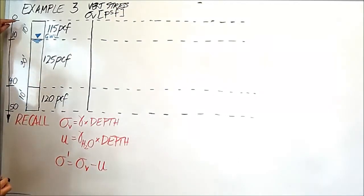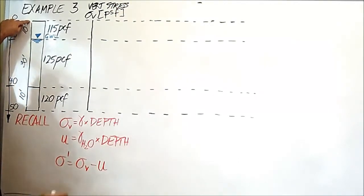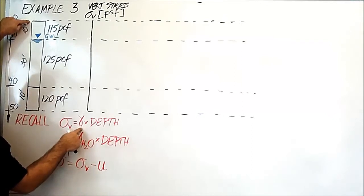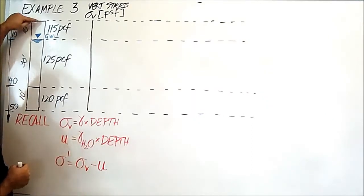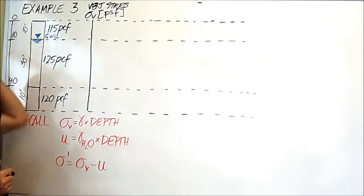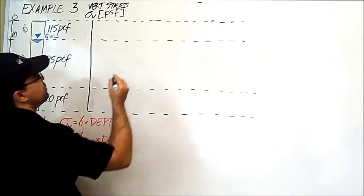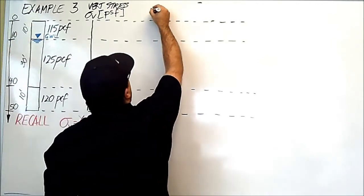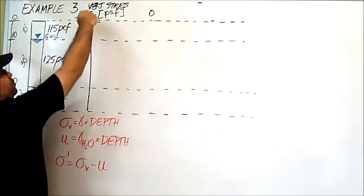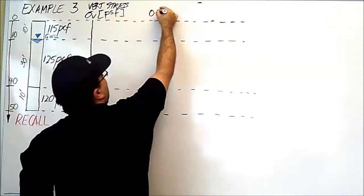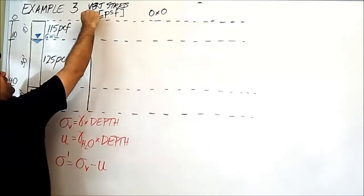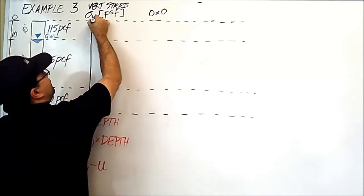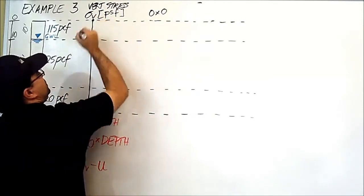We're going to start at the top. What is the stress at the very top? It's the density of the soil times the depth of the soil. There is no soil above, so the density is zero and the depth is zero. The value here is zero.